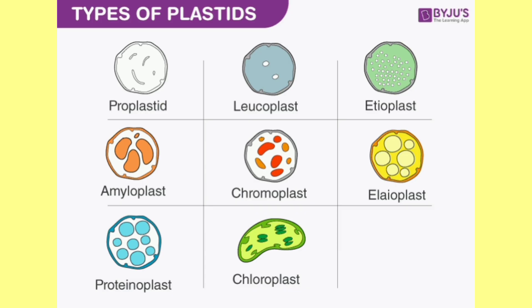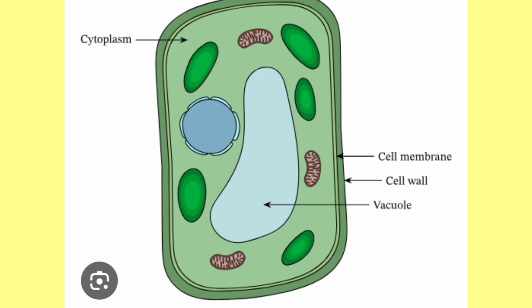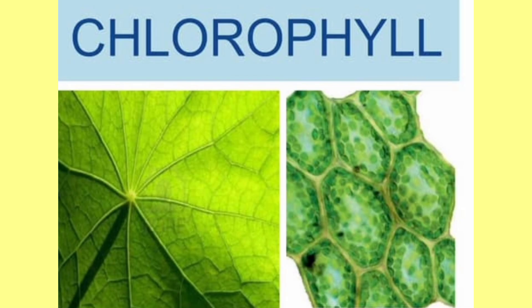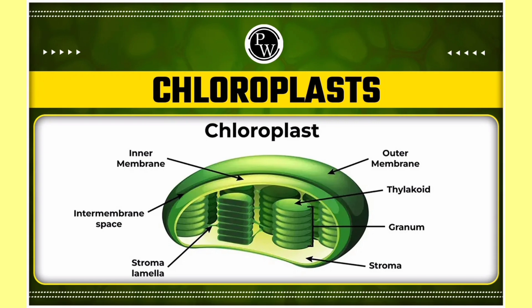Lastly, the plastid. It is a small colored body found in the cytoplasm of leaf cells. They contain pigments called chlorophyll. Green-colored plastids are called chloroplasts. They provide green color to plants and are also essential for the process of photosynthesis.